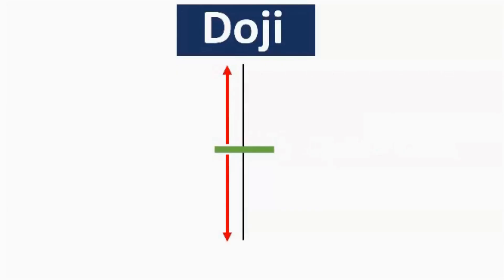The doji is said to be a reversal candlestick pattern. If this pattern is formed after a huge trended market — whether uptrend or downtrend — it gives us an indication that the market might reverse.